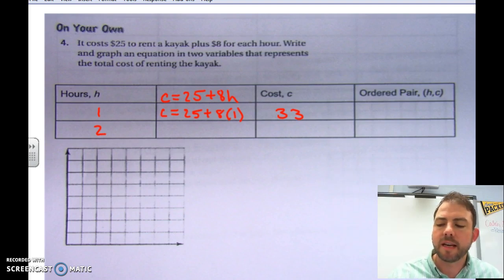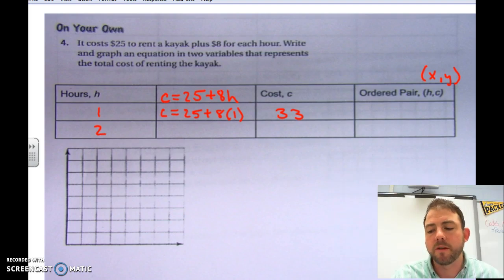Now, this creates an ordered pair. Notice that H and C are variables. You're familiar with what we're trying to do. That can also be represented as X and Y. Our ordered pair is 1, $33.